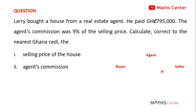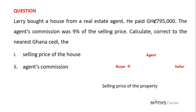The agent will go to the seller and negotiate for the price of the property. After that, as his agent fee or commission, he will charge a certain percentage of the selling price. So in fact, the buyer will be paying for two things: the selling price of the property, which goes to the seller, and the agent's commission, which goes to the agent.